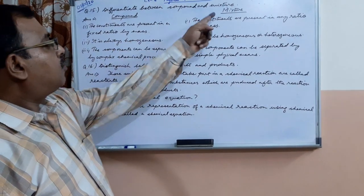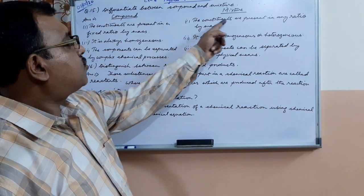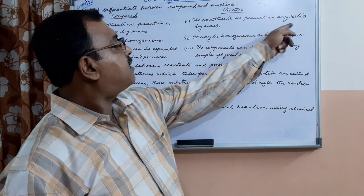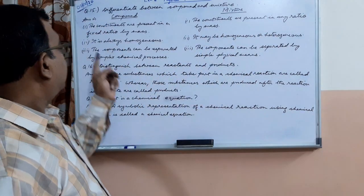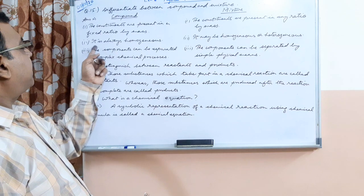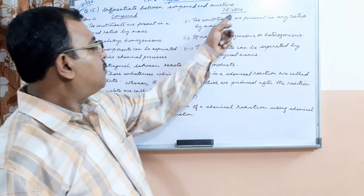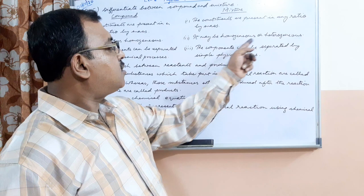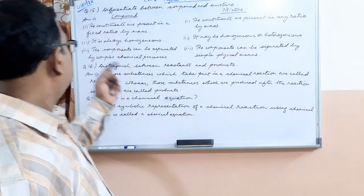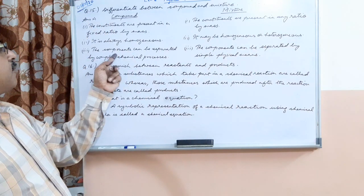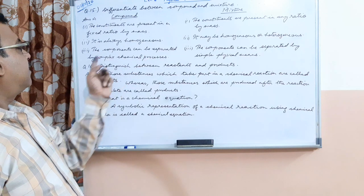Below mixture, first point: the constituents are present in any ratio by mass. Point number two below compound: it is always homogeneous. Below mixture: it may be homogeneous or heterogeneous. Point number three: the components can be separated by complex chemical processes.